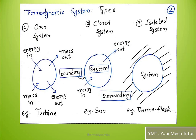Now let us look at the different types of thermodynamic systems. This is very important. There are three types: one is open system, second is closed system, and third is isolated system. In the diagram here, this is the system, this is the boundary, and this is the surrounding.